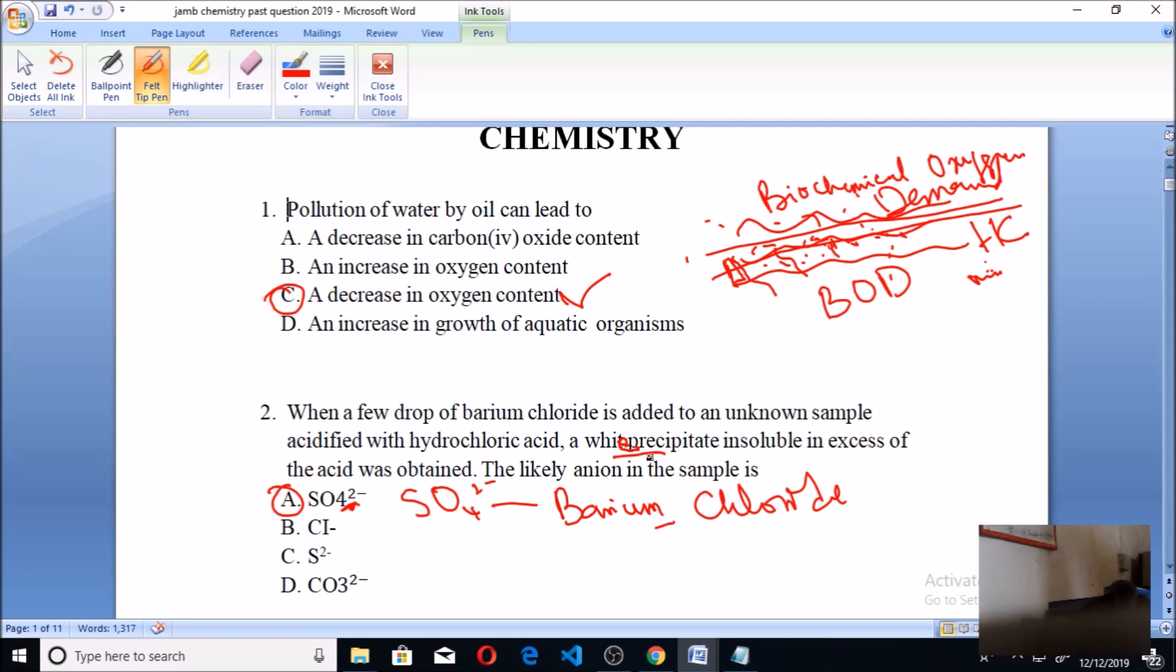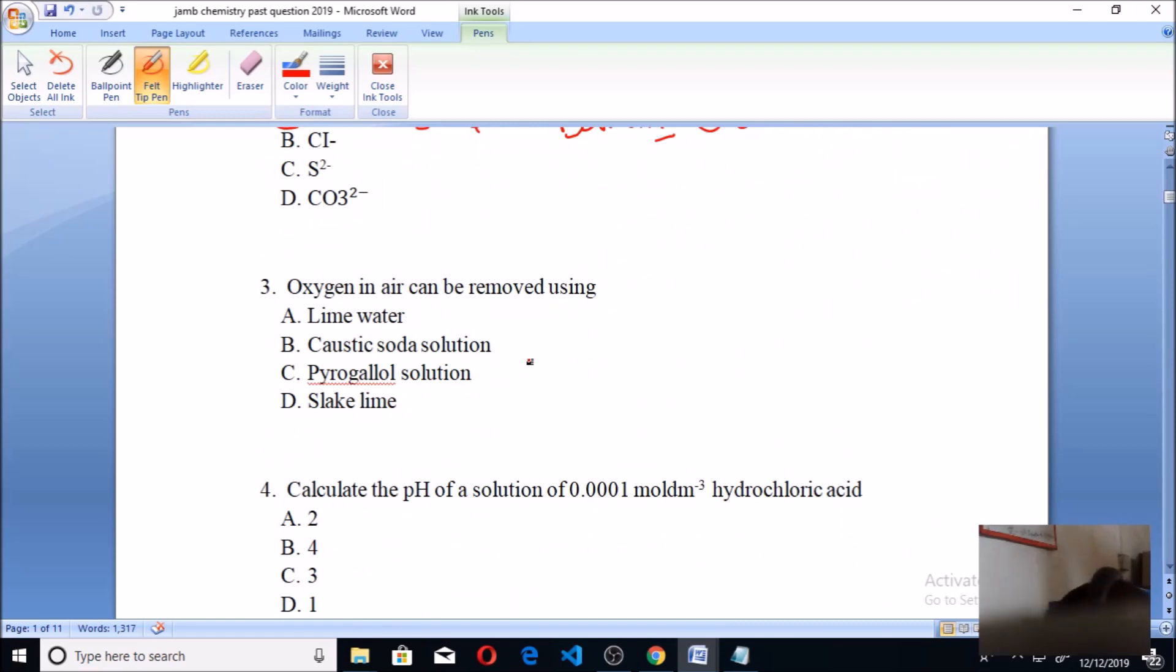Question three: Oxygen in air can be removed using what? When in alkaline solution, pyrogallol acid absorbs oxygen from the air, turning from brown to a colorless solution. So when this solution, which is brown, absorbs O2 oxygen, it will turn into a colorless solution. That is why we can easily use pyrogallol solution to remove oxygen from the air.